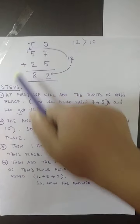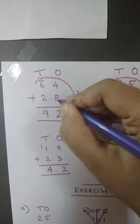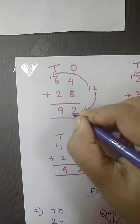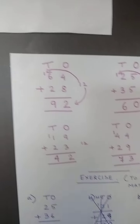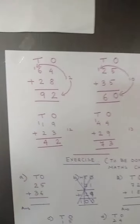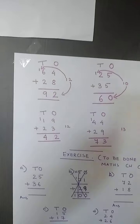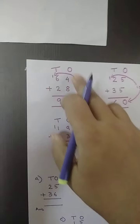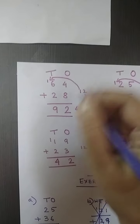One more example: 64 plus 28. Adding the ones: 4 plus 8 — counting gives 12. Here also I got 12, so this 2 comes here in the ones place, and this 1 I put with an arrow going to the tens. Parents, please make sure that when students are learning, they can write this arrow, but afterwards when they know it fully, no need for the arrow. Then I add 2 plus 6 is 8, and 8 plus 1 is 9 — so the answer is 92.